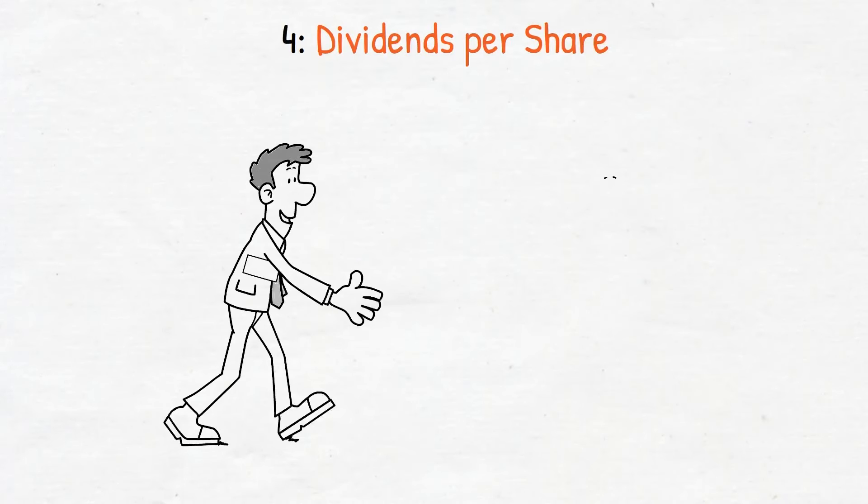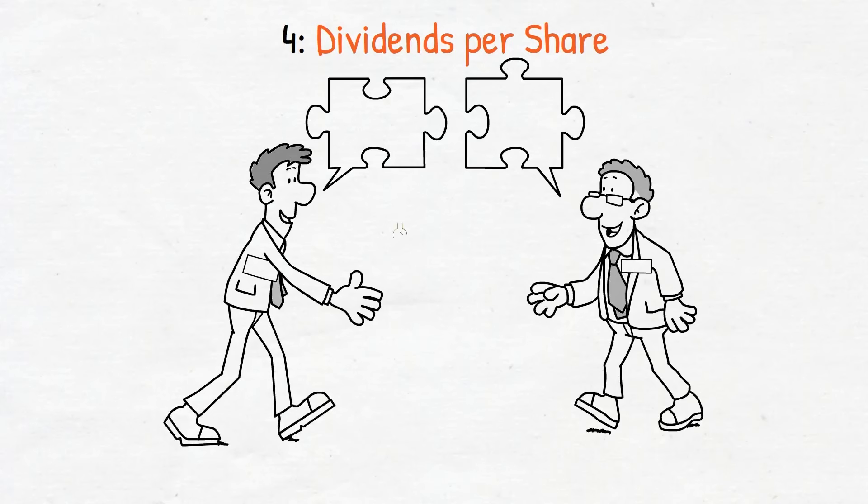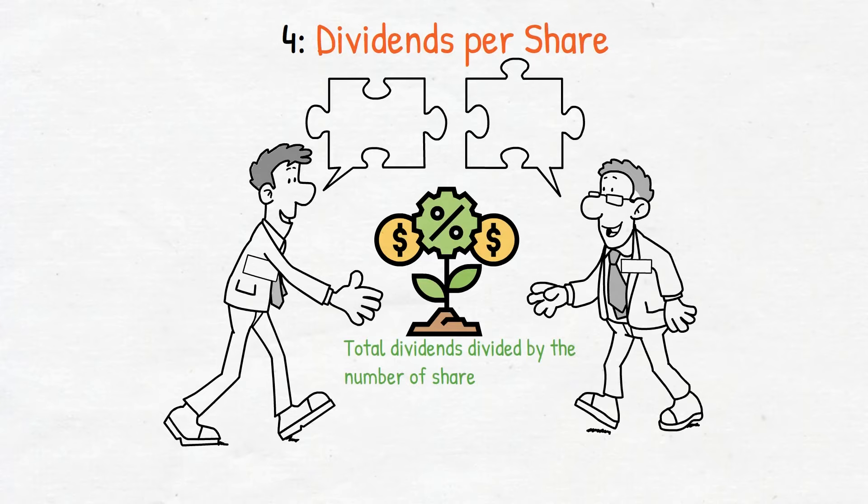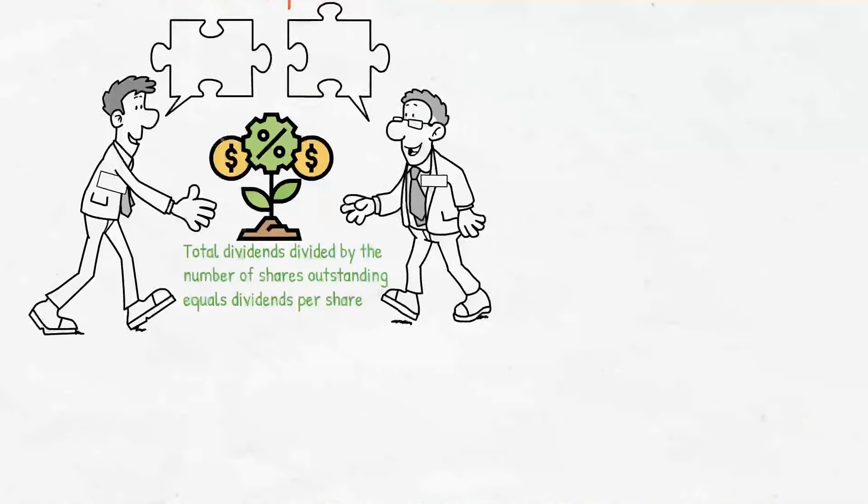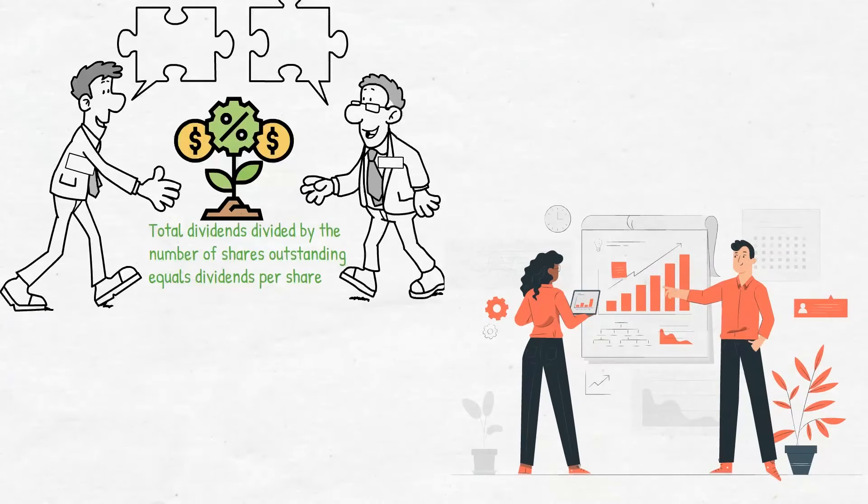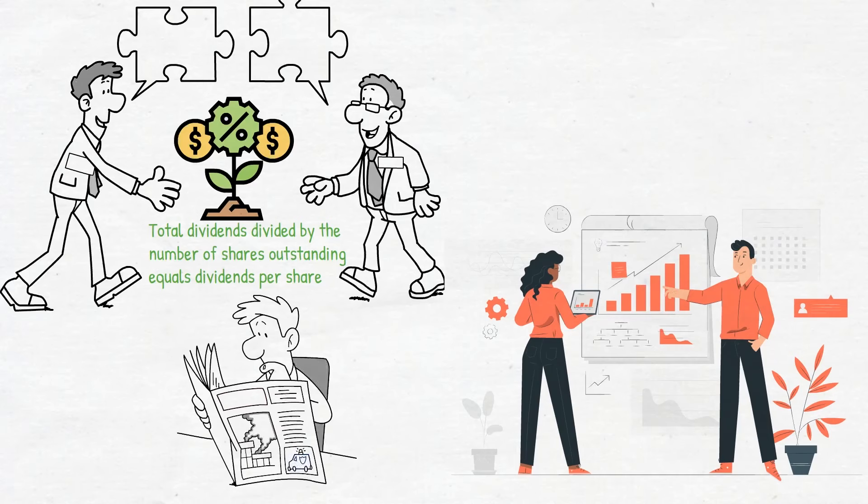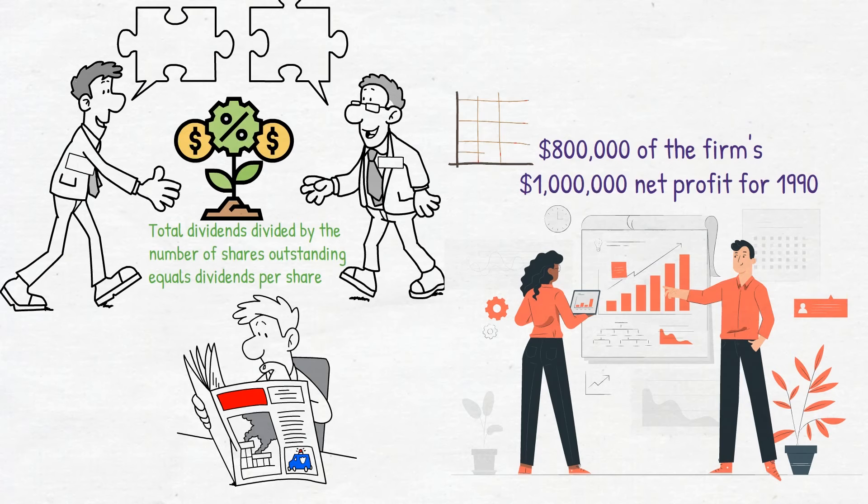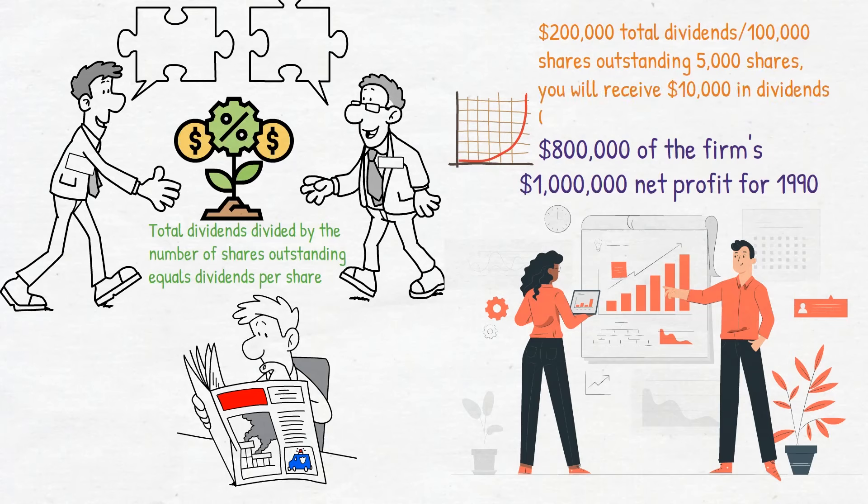The relationship between a company's total earnings and earnings per share is comparable to the relationship between the total dividend payments made by the company and dividends per share. Total dividends divided by the number of shares outstanding equals dividends per share. Suppose, for example, that the Standard Corporation announces it will return for reinvestment $800,000 of the firm's $1 million net profit for 1990. Then total dividend payments will be $200,000. Total dividends divided by 100,000 outstanding shares. If you own 5,000 shares, you will receive $10,000 in dividends: $2 per share times 10,000 shares.